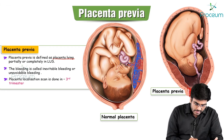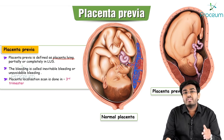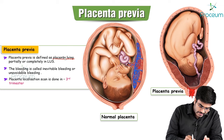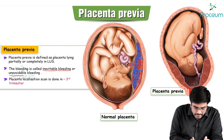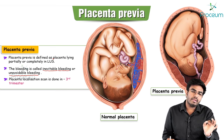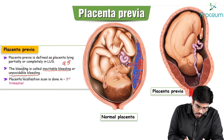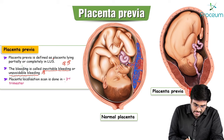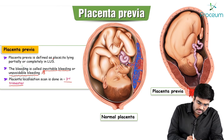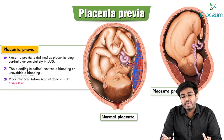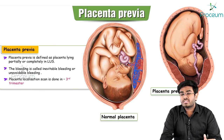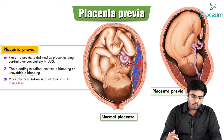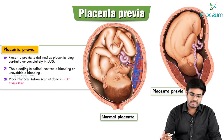The bleeding seen with placenta previa is called inevitable bleeding or unavoidable bleeding — with any placenta previa, there will definitely be bleeding. Placenta localization scan should be done in the third trimester, not the first or second trimester, because the placenta keeps changing its position.